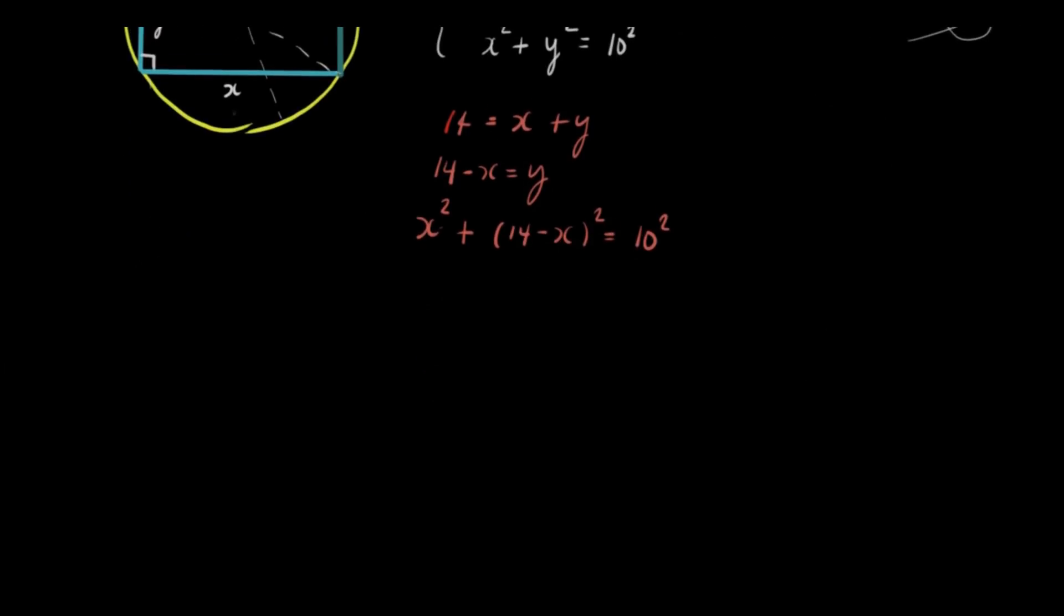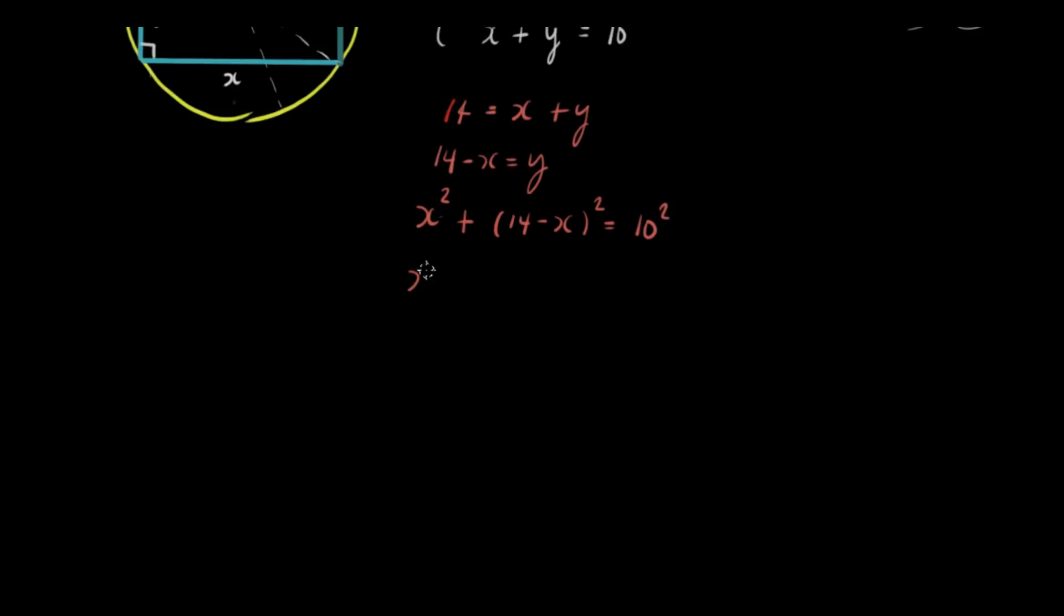And let's solve this. We have x squared plus this is 14 squared which is 196. 196 minus 28x plus x squared is equal to 100.